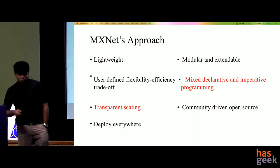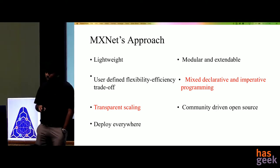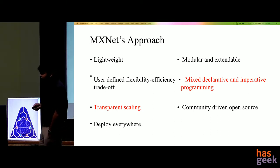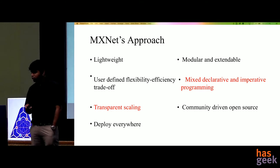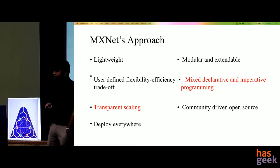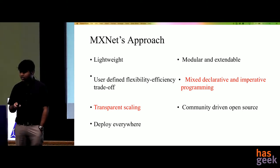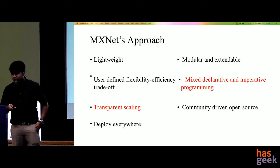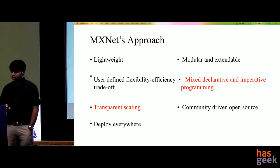How does MXNet handle these challenges? MXNet provides many cool features, but I want to focus on two main ones highlighted in red. First, it supports declarative and imperative programming. Second, it does transparent scaling. I'll discuss what both of these mean.